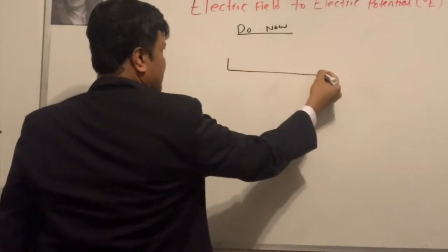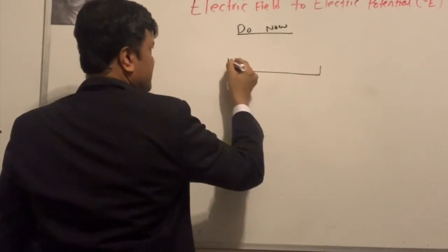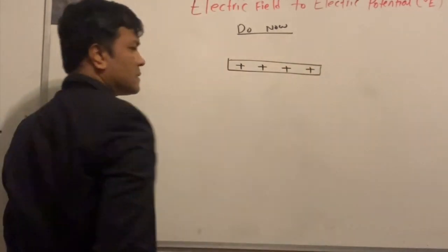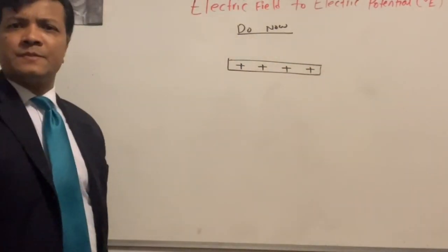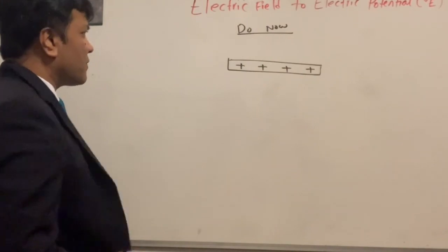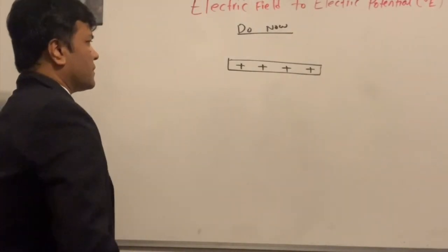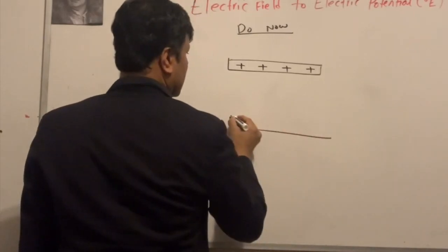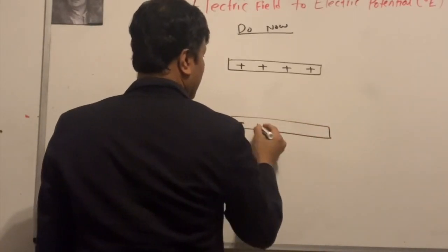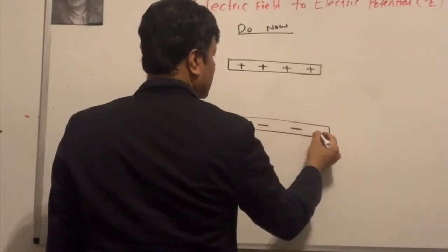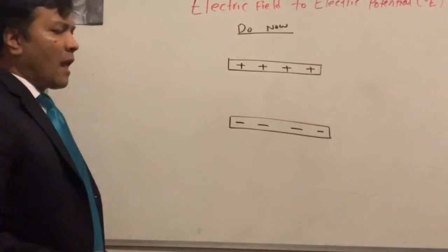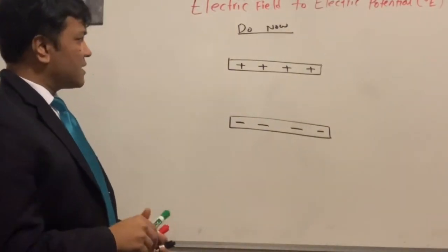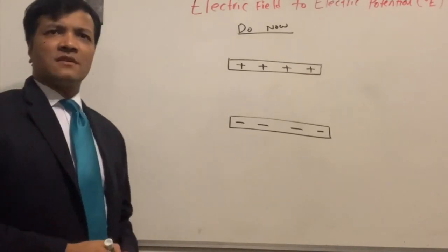I'm going to give you two plates: a positive plate on the top and a negative plate at the bottom. Now, can you guess the direction of the electric field lines?